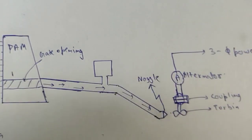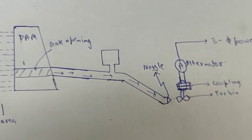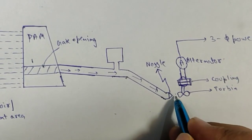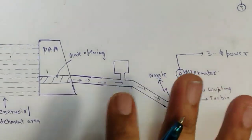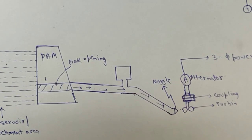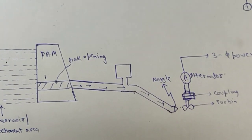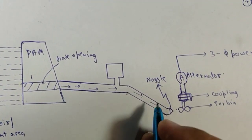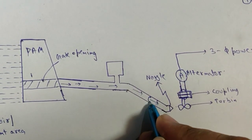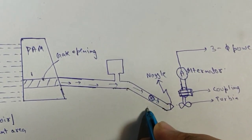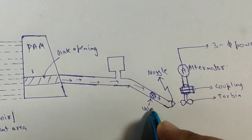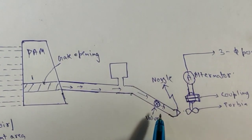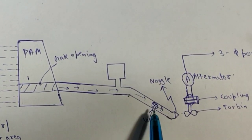The alternator supplies three-phase power to the domestic transmission line. Now, one valve is also present in the system. If we leave the working here, there are two problems associated with the valve.